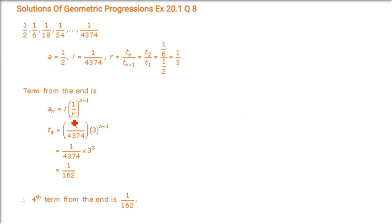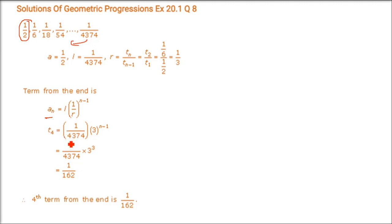Next, find the 4th term from the end of the GP. We have a direct formula: a_n = l · (1/r)^(n−1), where l is the last term. Here a = 1/2, r = (1/6)/(1/2) = 1/3, so 1/r = 3.